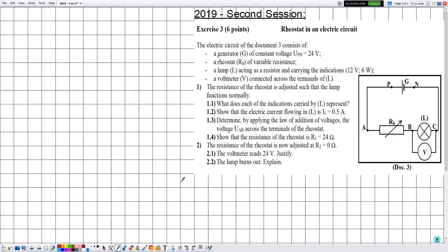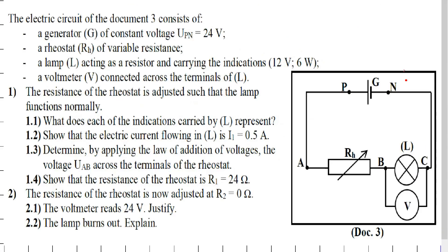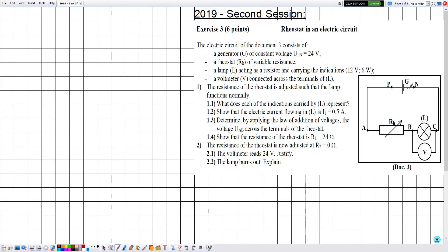Hello everyone. In this new video we are going to solve an exercise related to electricity, covering DC voltage, resistors, electric power and energy. This exercise was from the 2019 second session exam, exercise number three, titled 'Rheostat in an Electric Circuit.' The electric circuit consists of a generator G of constant voltage, where UPN equals 24 volts. A key trick is to write the given voltage directly on the electric circuit itself.